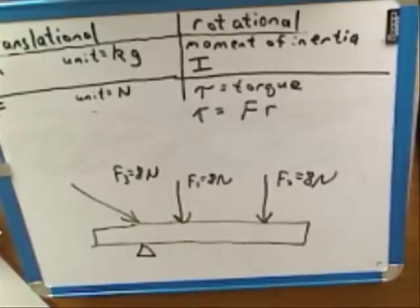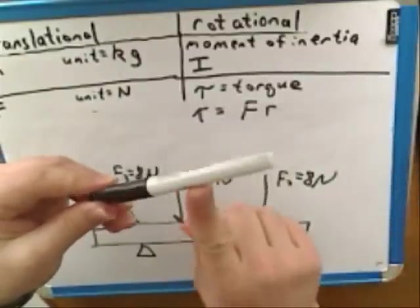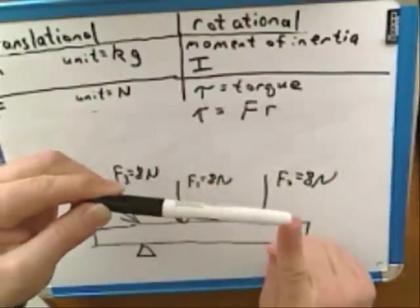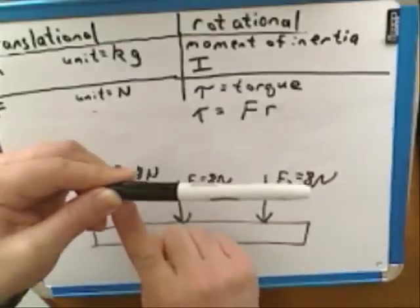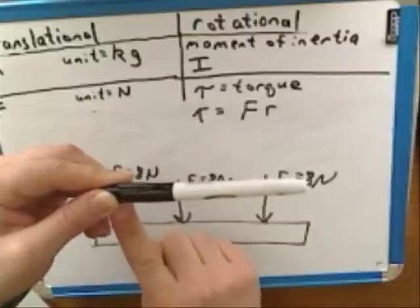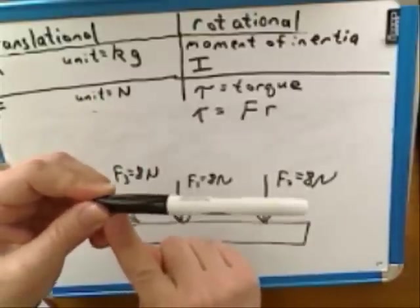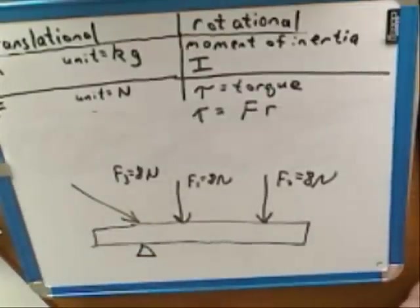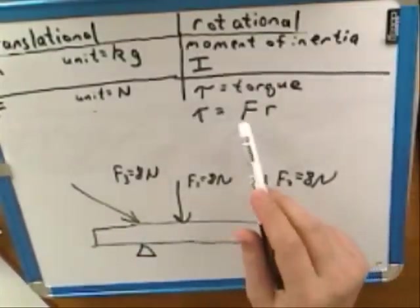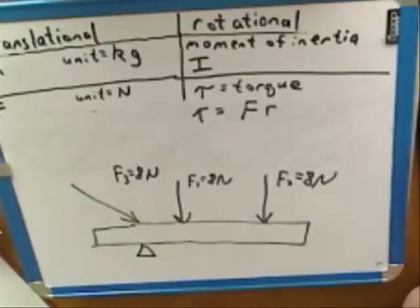You know that when you push at the fulcrum, you don't cause rotation. I can use my pen as an example. If I push here, I can make the pen rotate. If I push further out, it's easier to make the pen rotate. But if I push right at the pivot — the fulcrum is where my thumb is — I can't make it rotate around my thumb by pushing right on that point. That can't cause any rotation. This demonstrates again that it's not enough to look at the force alone; you also have to look at how far from the pivot the force is being applied.